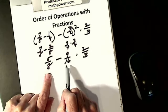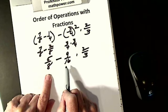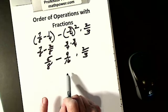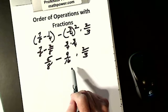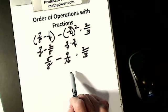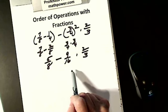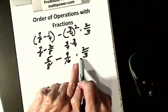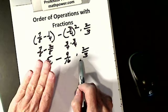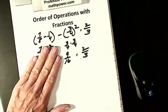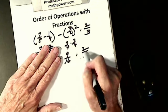Order of operations says after parentheses and exponents, I have to do any multiplication or division as they appear from left to right, before I do addition or subtraction. So I have to multiply nine-sixteenths times two-thirds before I can subtract.